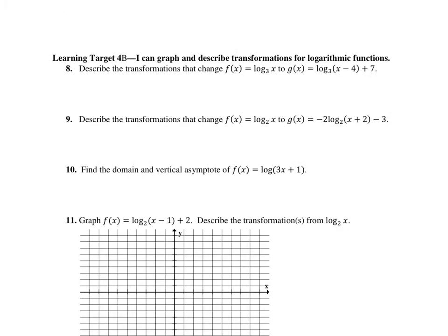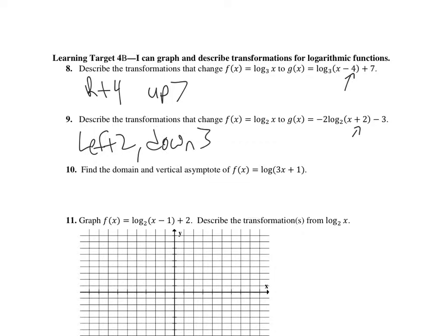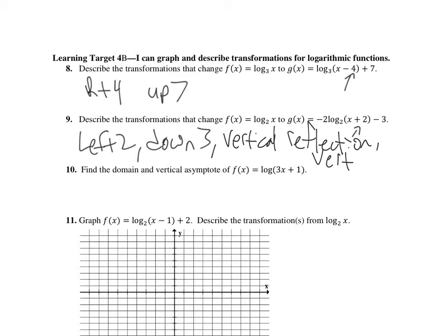Let's go on to the next page. Section 4b — we're graphing the logarithmic functions, and we've got some transformations again. This minus four, like usual, is going to go right four — inside is left or right. And this plus seven is going to go up seven. The transformations here: we're going to go left two, and we're going to go down three because of our negative three — that's a vertical change, outside is a vertical change. Vertical stretch of two.